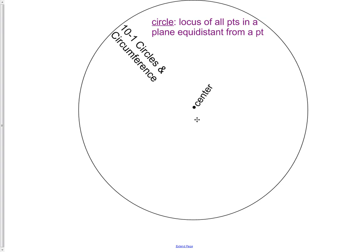That point is called the center. So when we talk about a circle, we're talking about all the points that are the same distance from this, the center of the circle.